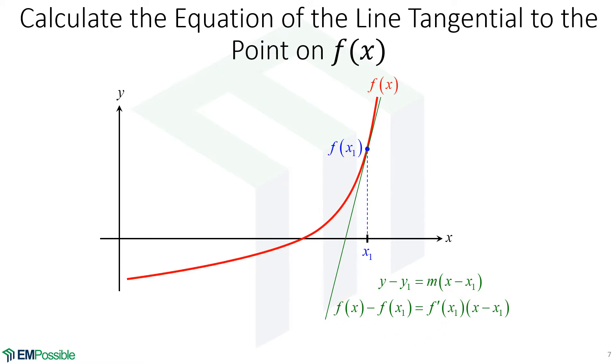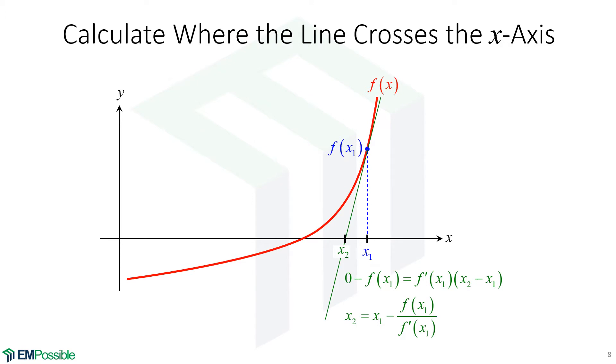Next step: we want to find out where that line crosses the x-axis, so y equals zero. We're setting the y term equal to zero and then we want to solve for x, which now we're labeling as x2, meaning that's the guess at the root for our second iteration.